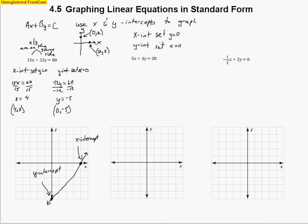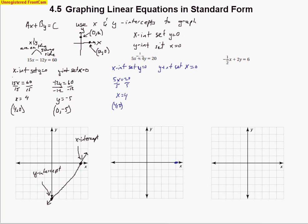For this next example, same sort of thing. To find the x intercept, we set y equal to 0, which removes the y term, leaving 5x equals 20. Dividing by 5 gives x equals 4, so the point is (4, 0) — same x intercept as last time. For the y intercept, we set x equal to 0, canceling out the x term, leaving 4y equals 20. Dividing by 4 gives y equals 5, so (0, 5) is where this line crosses the y axis.